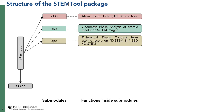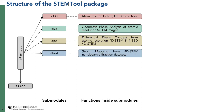The third sub-module is DPC, for differential phase contrast microscopy. This sub-module can do it either for atomic resolution 4D-STEM images or NBED 4D-STEM images. The fourth sub-module is NBED. It is for strain mapping of 4D-STEM nano beam electron diffraction datasets where the condenser aperture is small so that the diffraction spots in the CBED pattern do not overlap, and these individual patterns are fitted with Gaussian peaks to get the unit cell for each scan position and then get the strain from there.